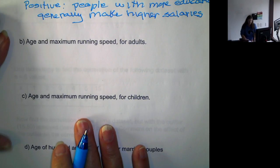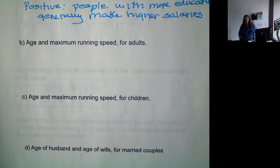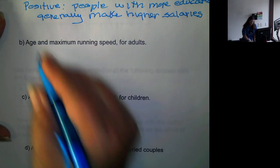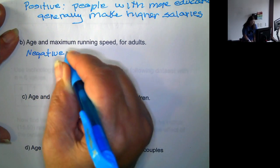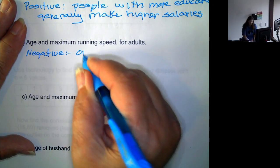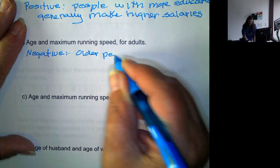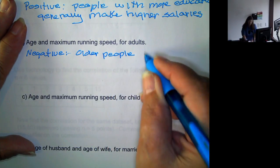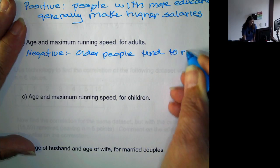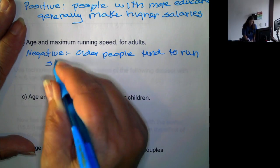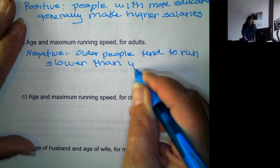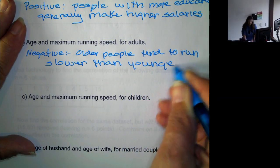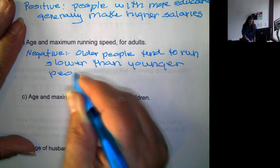Now, age and maximum running speed for adults. As people get older, they have a tendency to run slower. So this would be a negative association. That's because older people, such as 80-year-olds, tend to run slower than younger people, such as 20-year-olds.